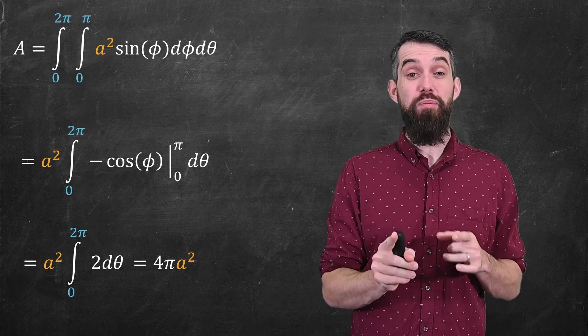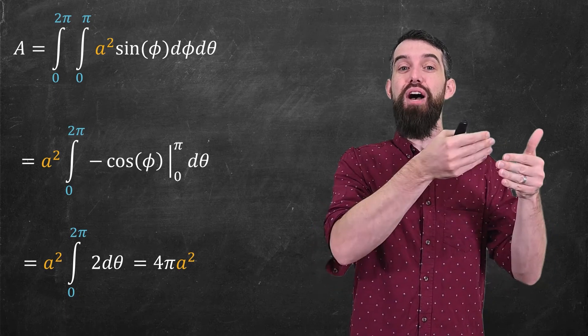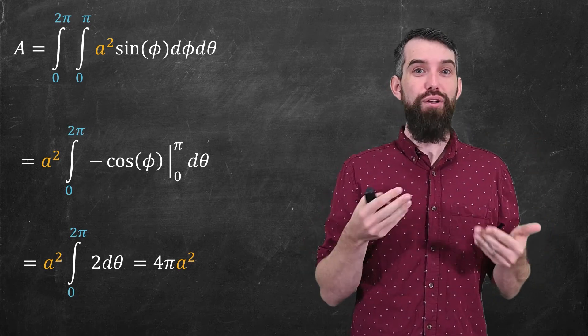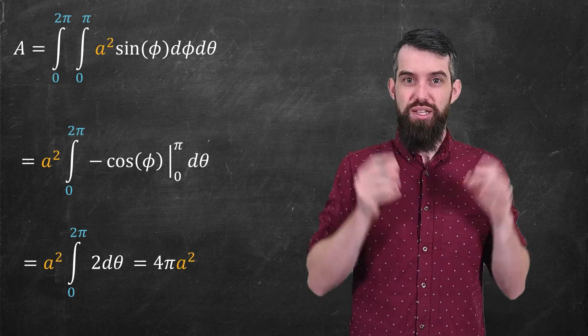That is, we have computed out that the surface area of a sphere of radius a is 4πa², the result you may have known.